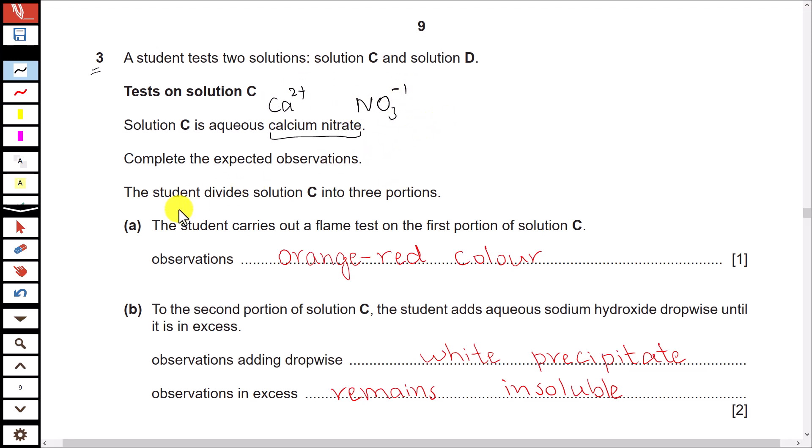The student divides solution C into three portions. Student carries out a flame test on the first portion of solution C. The positive ion present in this solution is calcium ion, and the color for the flame in this case is orange-red color.